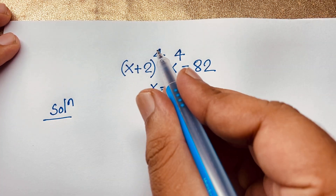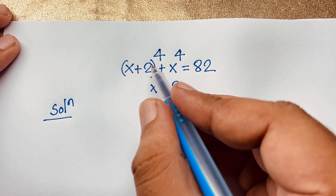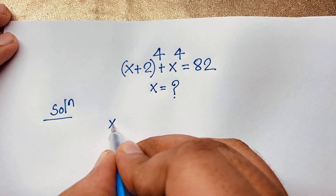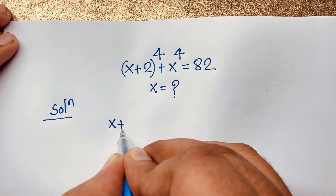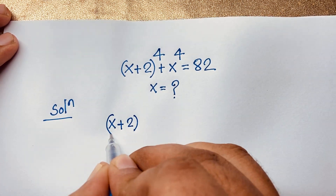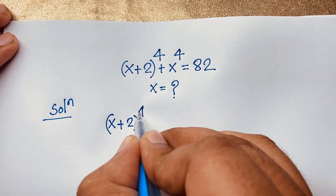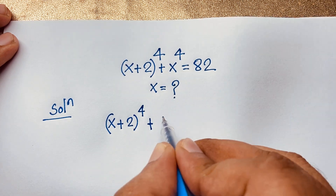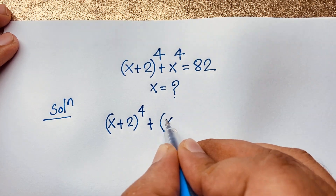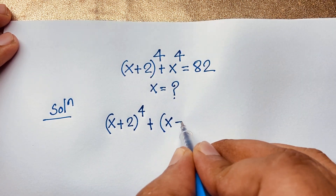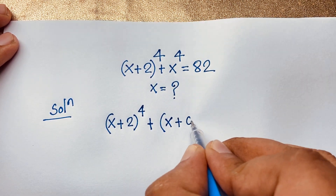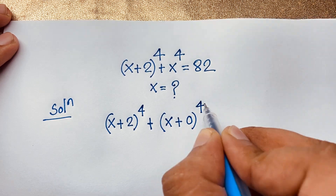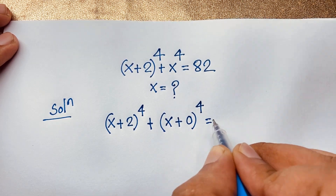Our math solution. Here, (x + 2) whole to the power 4 — you can see this expression, it will be (x + 2), bracket, power is 4. And this expression, you can see it will be x plus 0, power is 4, is equal to 82.